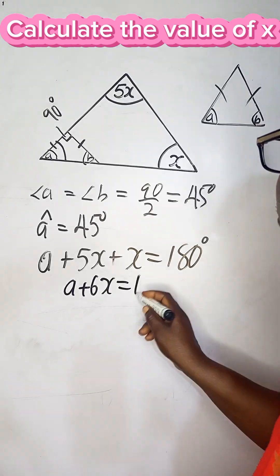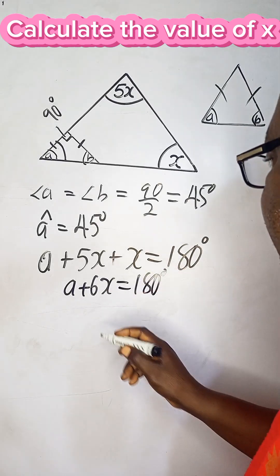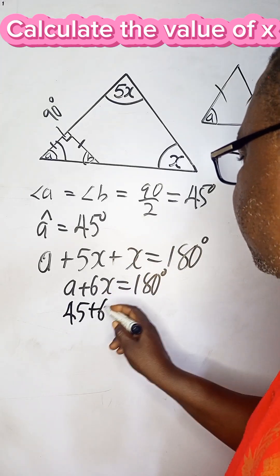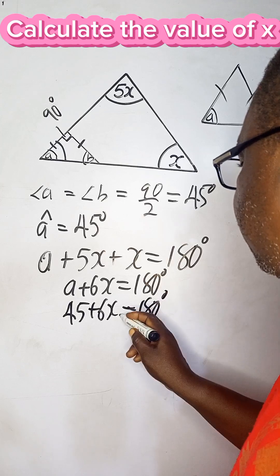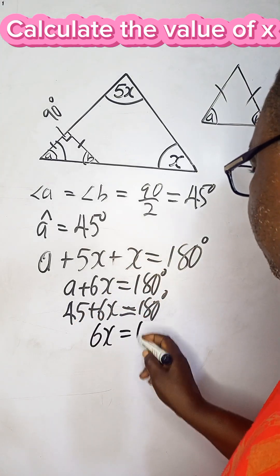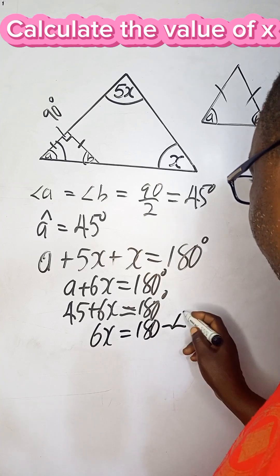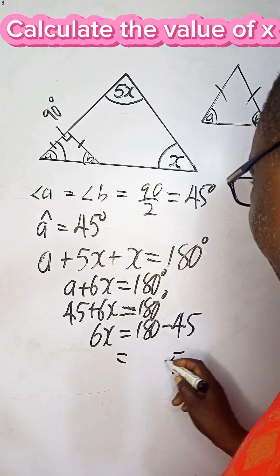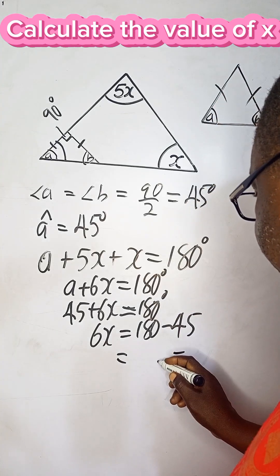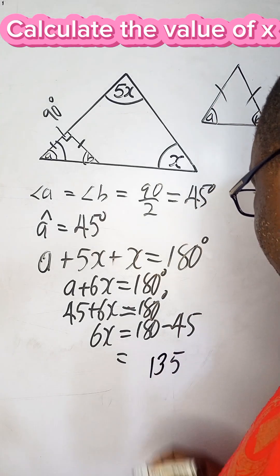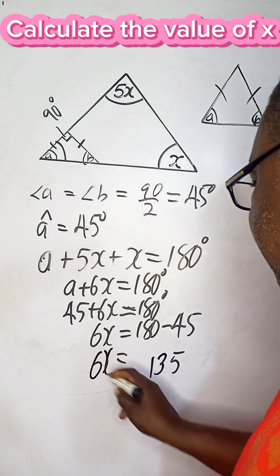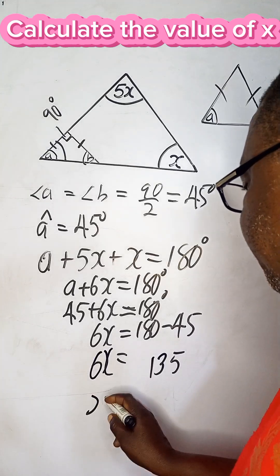We know that a is 45 degrees, so 45 + 6x = 180 degrees. Taking 45 to the other side, we have 6x = 180 minus 45, which is 135 degrees.